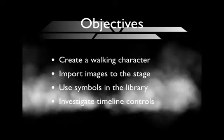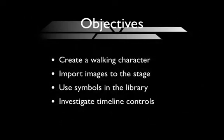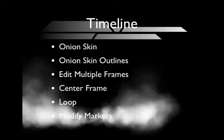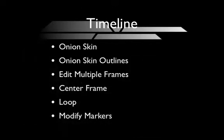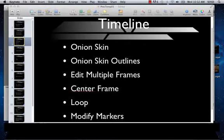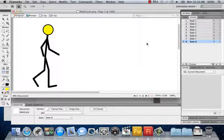In this video we're going to be creating a walking character using a frame-by-frame animation. We'll learn how to import images to the stage, convert them to symbols, use the library panel to organize them, and investigate some timeline controls. On the timeline, we're going to cover onion skins, onion skin outlines, edit multiple frames, center frame, loop, and modify markers.